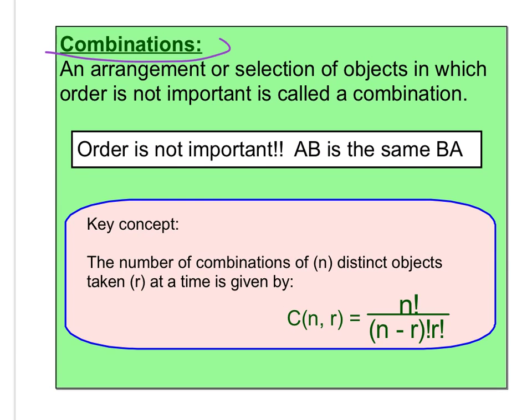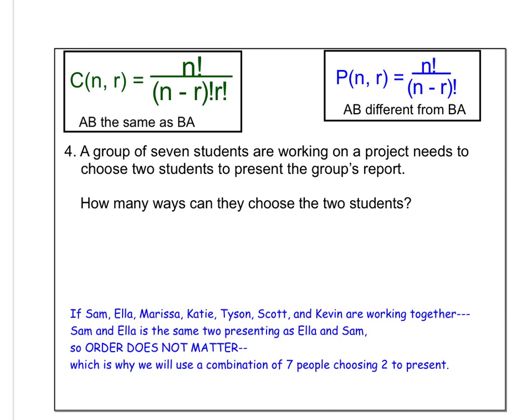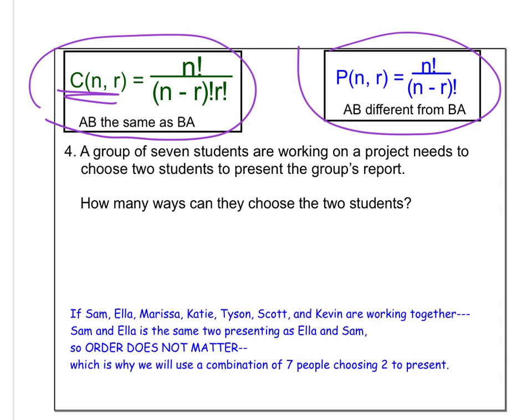So combinations are where it's not an arrangement anymore. Now it's a grouping. Now we're trying to group objects. So A, B is the same as B, A. As long as you got picked, you're good. So that's kind of what we're looking at here. So here's my combination. Here's my permutation. So we call that C, but it still said N choose R, but it's a combination.